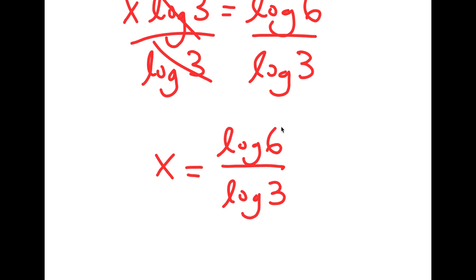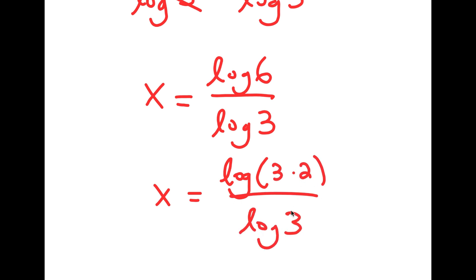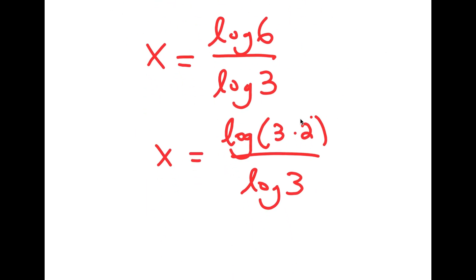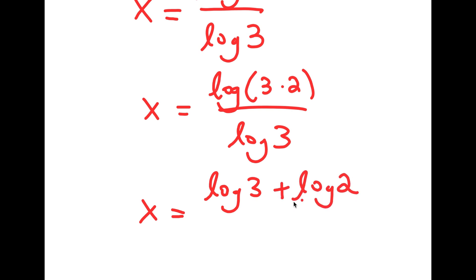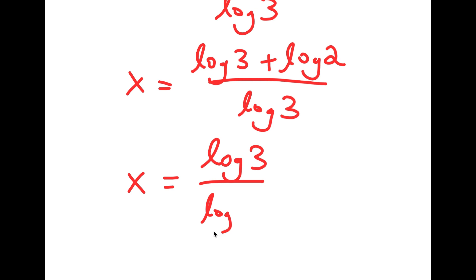Now, I'm going to rewrite 6 as 3 times 2. So I get log of 3 times 2 over log 3. And remember, now we can use our second property — log a times b is equal to log a plus log b — so log 3 times 2 equals log 3 plus log 2. And I have this over log 3.